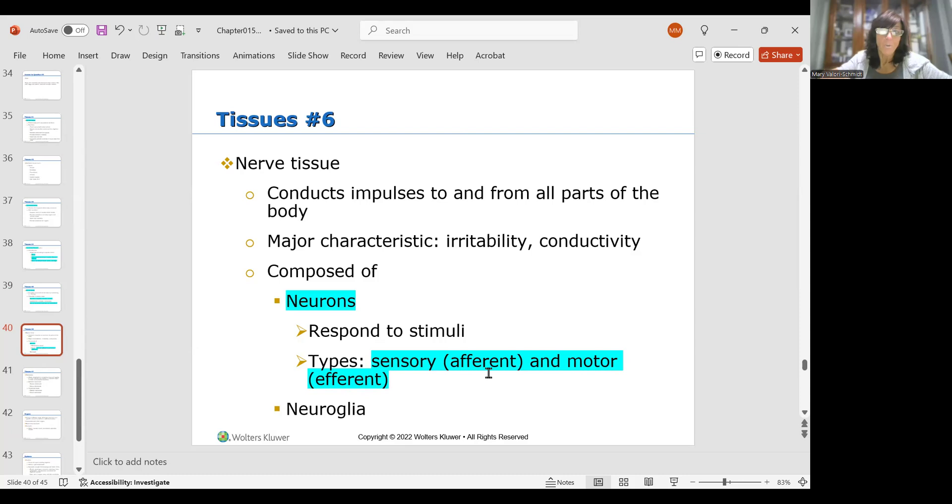Sensory is when you put your hand close to something hot and you pull away. That's your sensory tissue, your sensory neurons sending a message to your brain saying it's hot. Your motor neurons, the efferent ones, pulled your hand away, made your hand move. So the sensory are the ones that feel and the motor are the ones that move. Make sense?